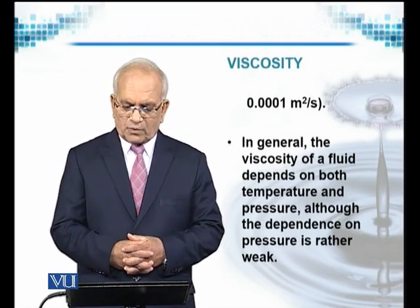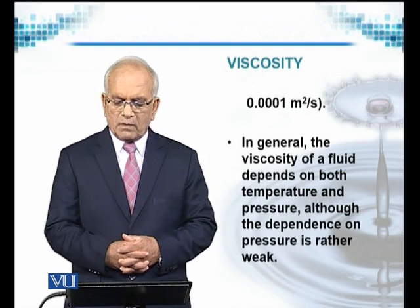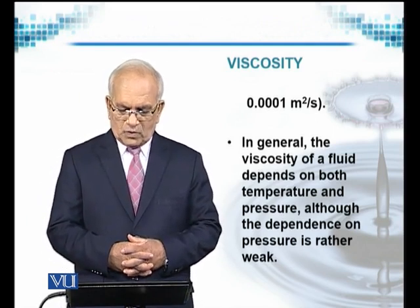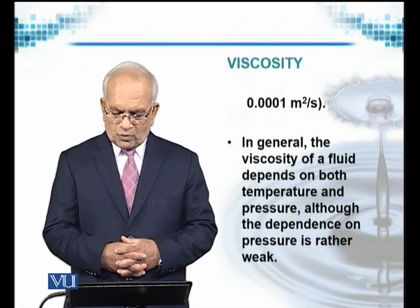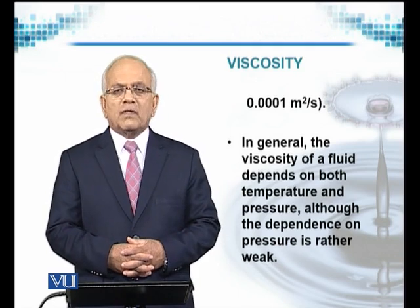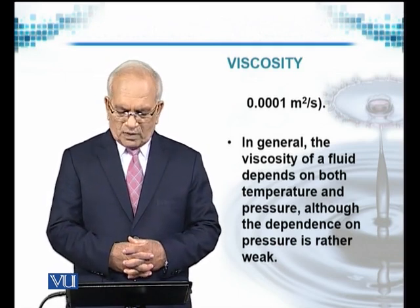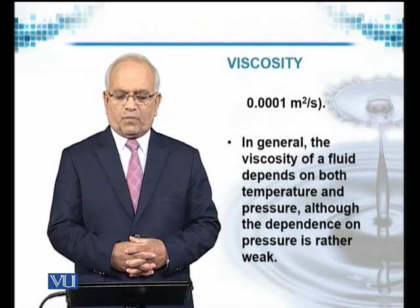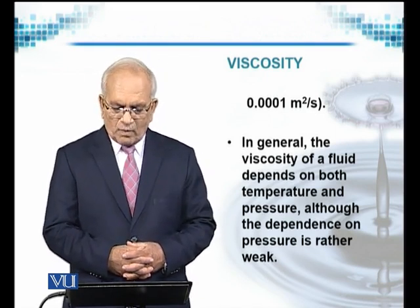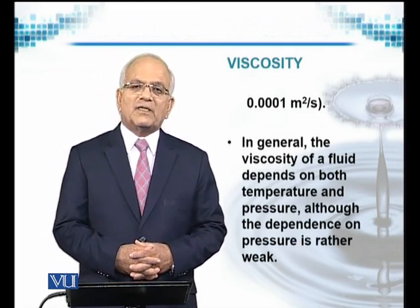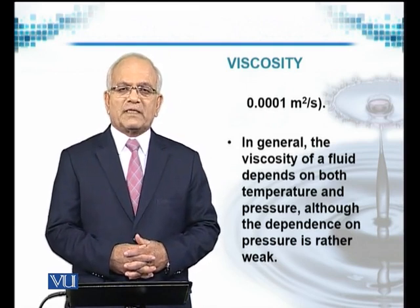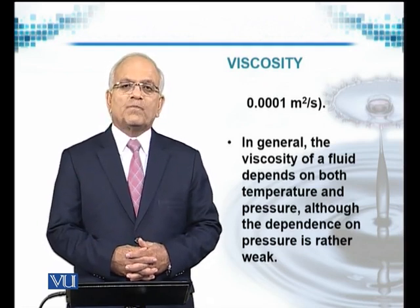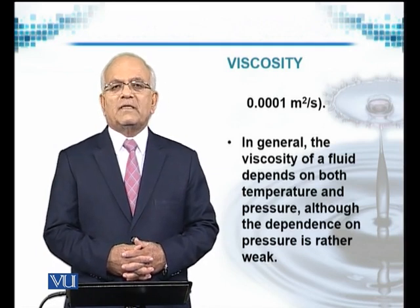One stoke is equivalent to 0.001 meter squared per second. In general, the viscosity of a fluid depends on both temperature and pressure, although the dependence on pressure is rather weak. If we apply pressure, the liquid remains the same — for example, if the liquid is water, it will remain the same. But for gases, applying pressure to a certain volume changes the density of that volume. Therefore, the ratio mu over rho will also change because rho is changing.